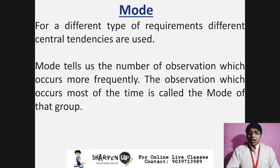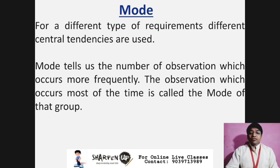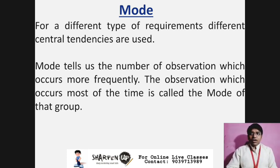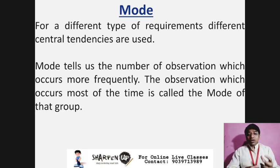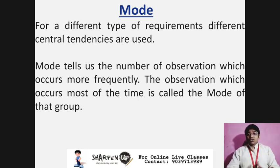For different types of requirements, different central tendencies are used. Mode tells us the observation which occurs most frequently. For example, a group of 10 friends went to an ice cream parlor where three asked for vanilla flavor, two asked for strawberry flavor, and five asked for chocolate flavor. We can observe that the most preferred flavor is chocolate. Since five students asked for it, the mode of that group is five.